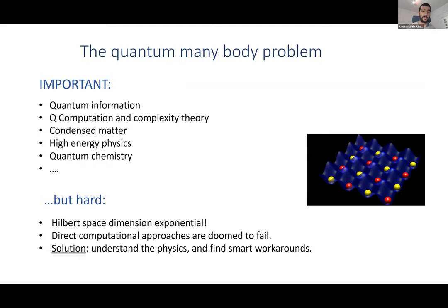Of course it's a very hard problem. The reason is that the Hilbert space of the many-body Hamiltonian has a dimension that is exponential in the system size. So when you try to increase the system a little bit, you basically cannot do direct computations — you'd need to diagonalize matrices of size 2^50 or 2^100, or maybe 2^200, which is completely infeasible. The historical solution has been to understand the physics of this problem.